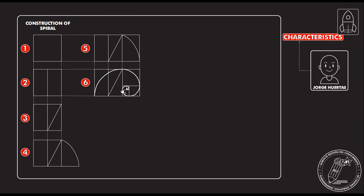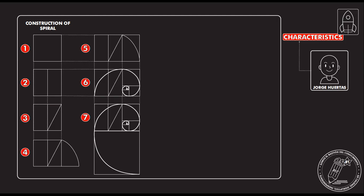With this proportion we start developing the spiral. As you can see on the screen, each part is half of the other part — this part is half of this part, this part is half of this, and so on until reaching the minimum expression. Then we make the prolongation and we get the whole spiral.